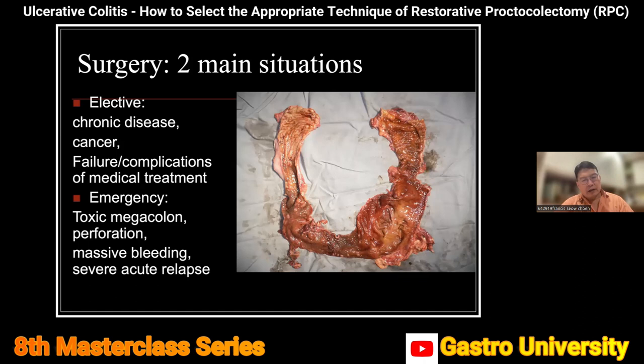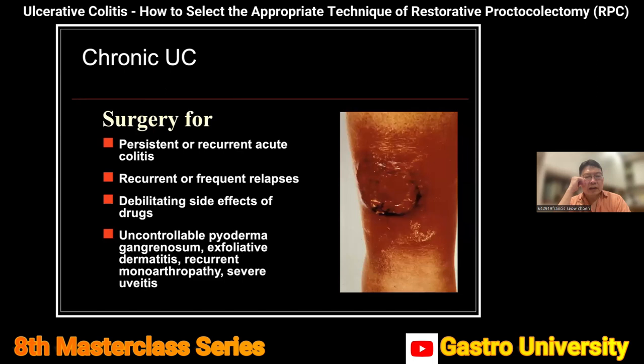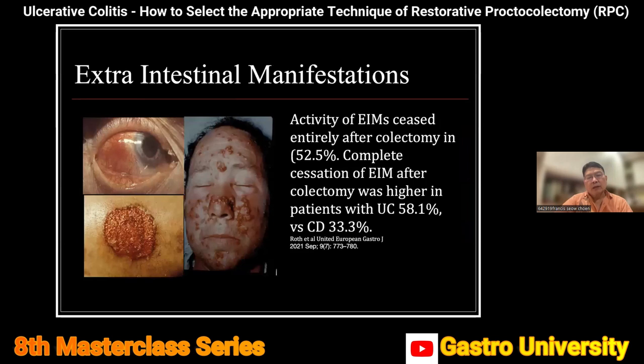We also have a big group of patients who come in with emergency problems like toxic megacolon, perforation of the intestines, massive bleeding, and those with acute severe relapse. Surgery in chronic ulcerative colitis can also be indicated for uncontrollable pyoderma gangrenosum or exfoliative dermatitis, recurrent monoarthropathy, or severe uveitis — some of which may need surgical treatment.